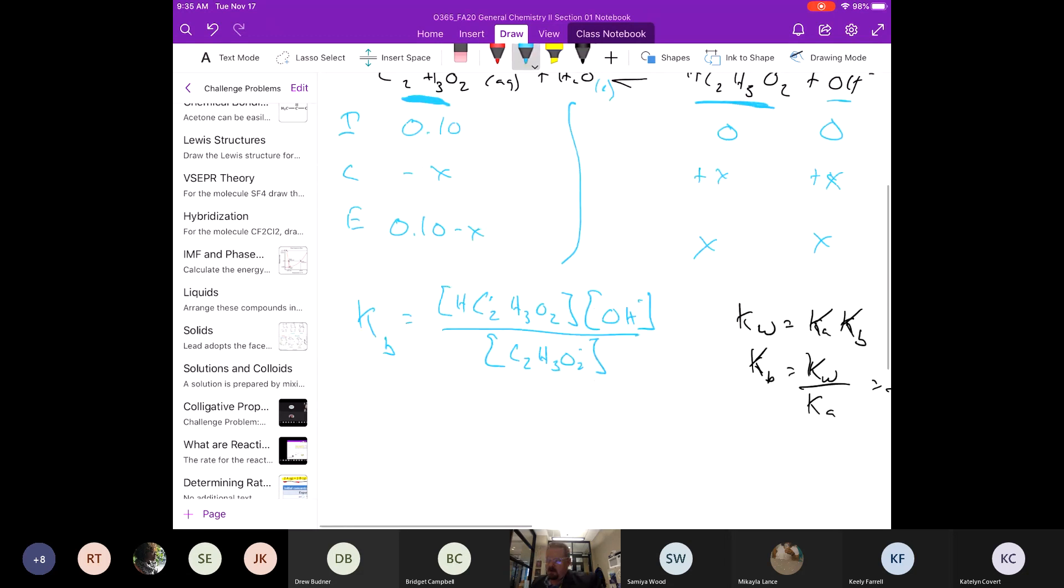Then we can come back over here. This becomes 5.56 times 10 to the negative 10th is equal to X times X divided by 0.10 minus X. So at this point we can solve. As my physics professor used to say, the science is over now, it's just math.